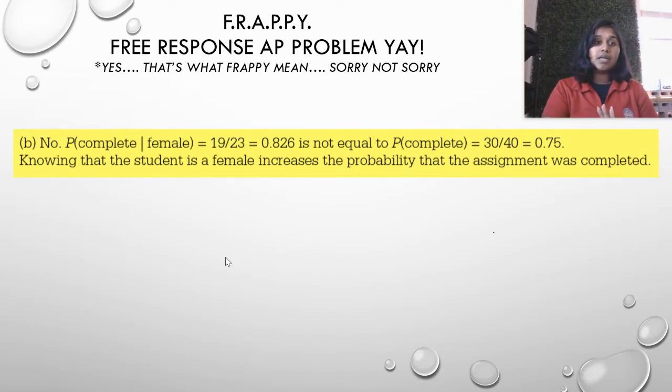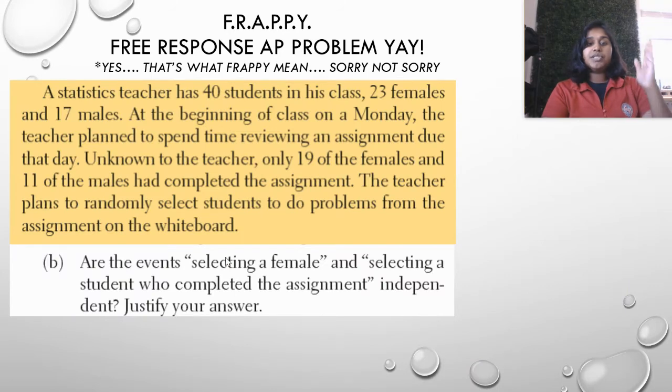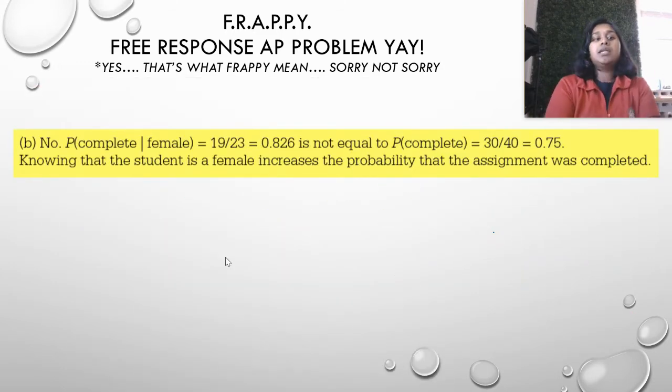There's a train going by. He's a little loud. Sorry about that. Hopefully you can't hear it too much. But to answer our question, are the events selecting a female student to complete the assignment independent? The answer is no, because those two calculations don't equal each other. So here's our justification. No, because our conditional probability of P of completed assignments given female is 19 out of 23 is not equal to the P of just the completed assignment, which was 0.75 or 30 out of 40. A little justification further would be knowing that a student is female actually increases the probability that the assignment was complete.